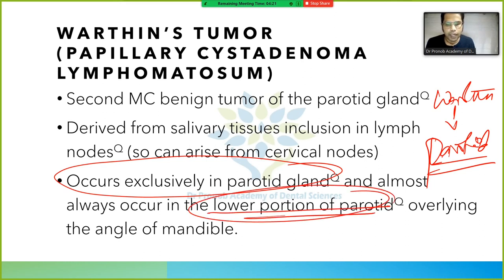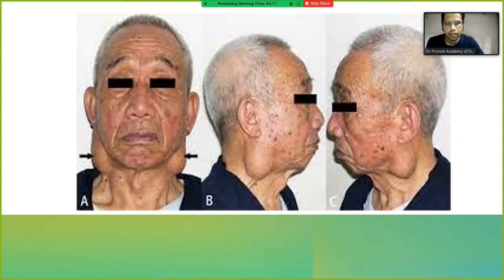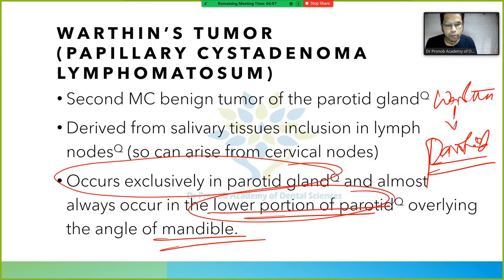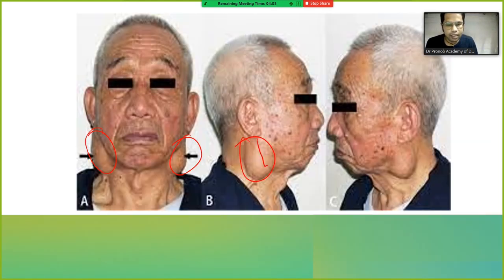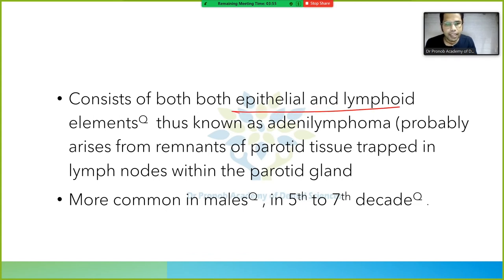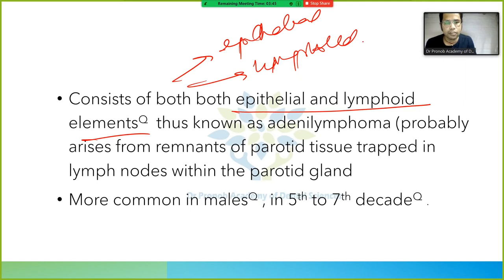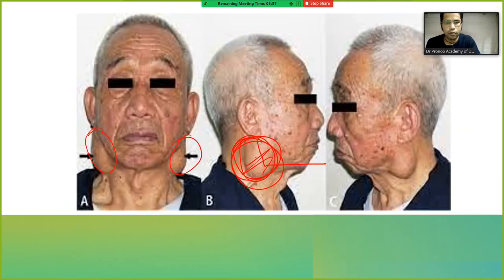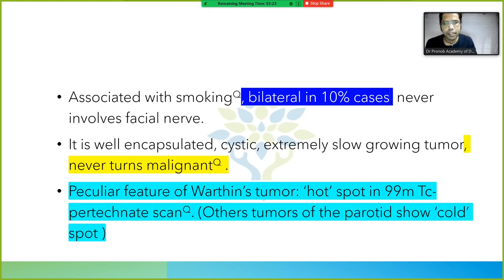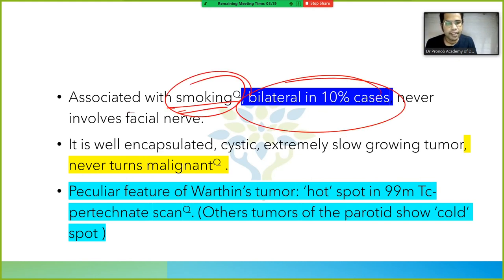Warthin tumor occurs exclusively in the parotid gland and nowhere else. It always occurs in the lower portion of the parotid, overlying the angle of the mandible. It consists of both epithelial and lymphoid elements — that is why it is also called adenolymphoma. It is more common in males in the fifth to seventh decade.